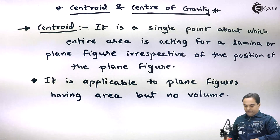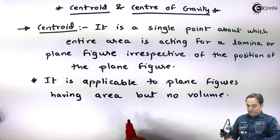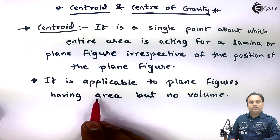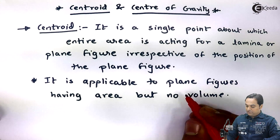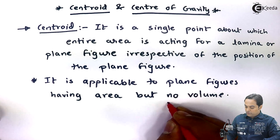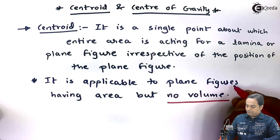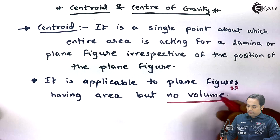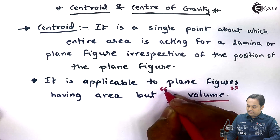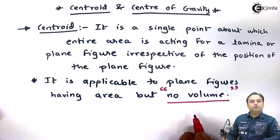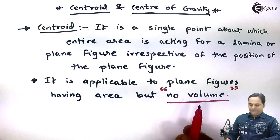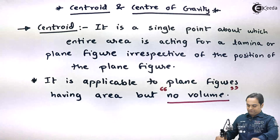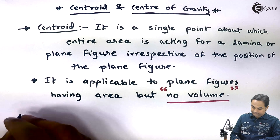When you talk about Centroid, it means you are talking about a figure which has area but which has no volume. By no volume, it is clear that it is not a solid but a 2D figure.